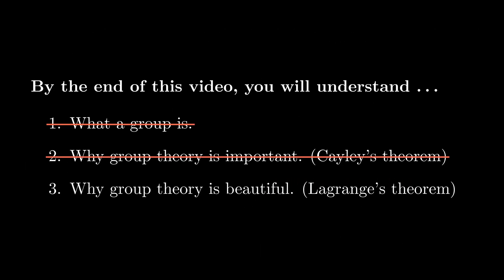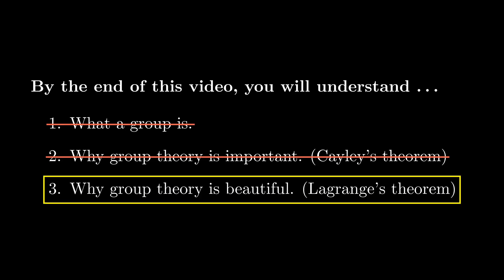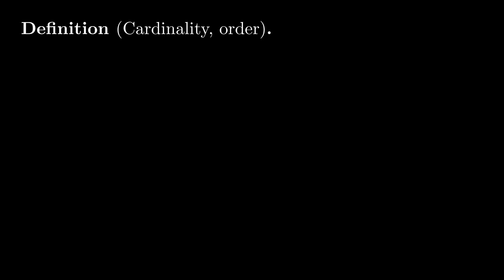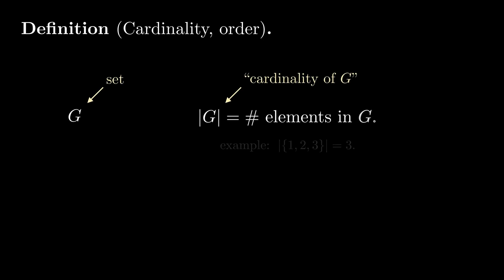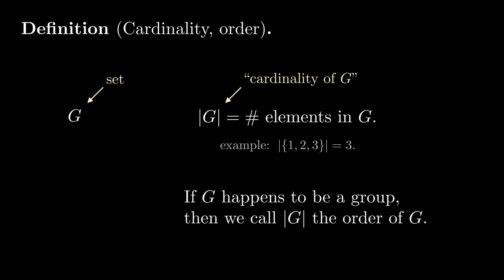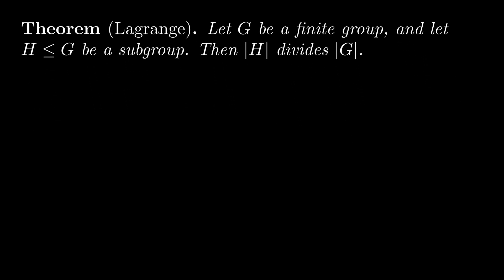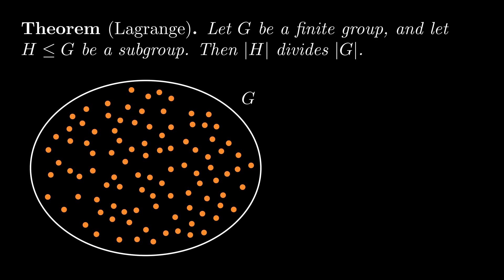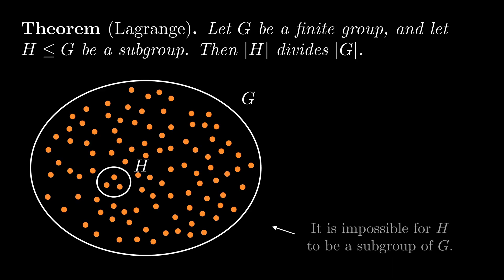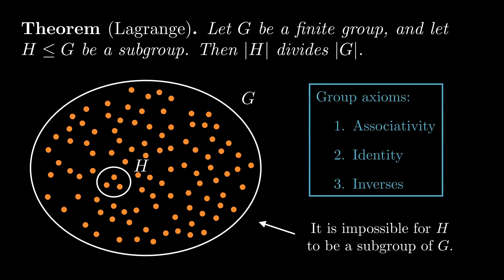Our remaining goal in this video is to prove one of the most fundamental theorems in finite group theory: Lagrange's theorem. First, recall that the cardinality of a set is simply the number of elements the set contains. If this set happens to be a group, then another name for its cardinality is the order of the group. Lagrange's theorem states that given any finite group g and any subgroup h, the order of h divides the order of g. For example, if g is a group of order 100, then it's impossible for g to have a subgroup of order 3, since 3 does not divide 100. Just looking at the group axioms, it's not so obvious why this should be impossible. In this way, Lagrange's theorem gives us a huge amount of information about the possible structures that a group can have.